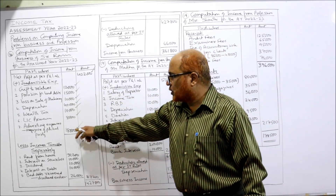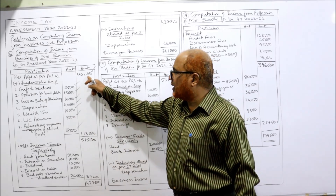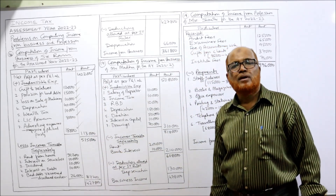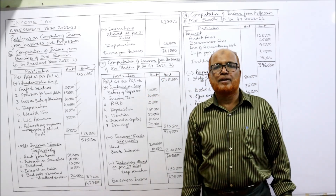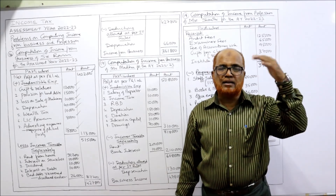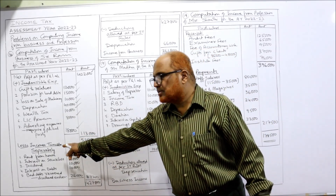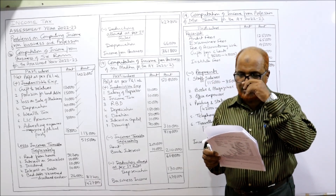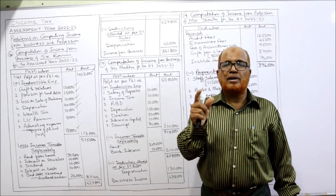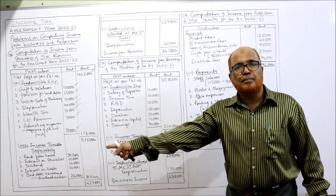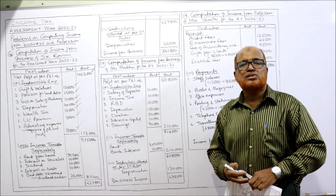The total inadmissible expenses are 1,13,000. Add this to net profit: 4,02,000 plus 1,13,000 equals 5,15,000. Now from this we deduct incomes which are not taxable under business income — incomes taxable under other heads but credited in the profit and loss account. First, gross profit is given. Rent from house is taxable under income from house property, not under business income — so deduct rent from house.